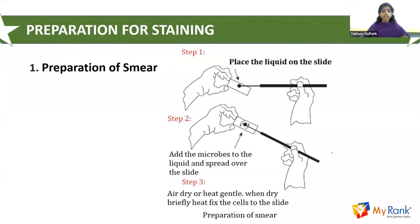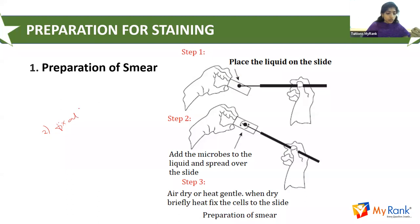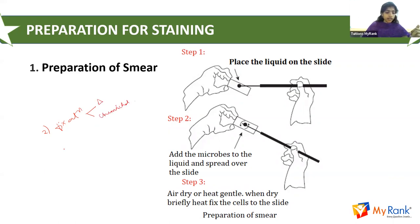Now let's talk about the preparations. There are three important steps before carrying out staining. The first is preparation of smear. The second is fixation, which can be done in two ways: either heat fixation or chemical fixation. The third step is obviously staining.